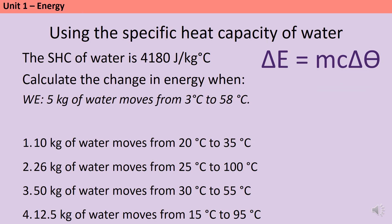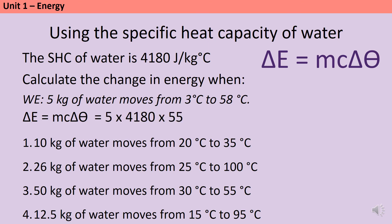Let's look at some more calculations, which all use water, which has a specific heat capacity of 4,180. First, a worked example: we want to calculate the change in energy when 5 kilograms of water is heated from 3 degrees C to 58 degrees C. The energy change is the mass multiplied by the specific heat capacity multiplied by the change in temperature. So that's 5 kilograms multiplied by 4,180 multiplied by 55 — the change from 3 to 58 degrees C — giving 1,149,500 joules.